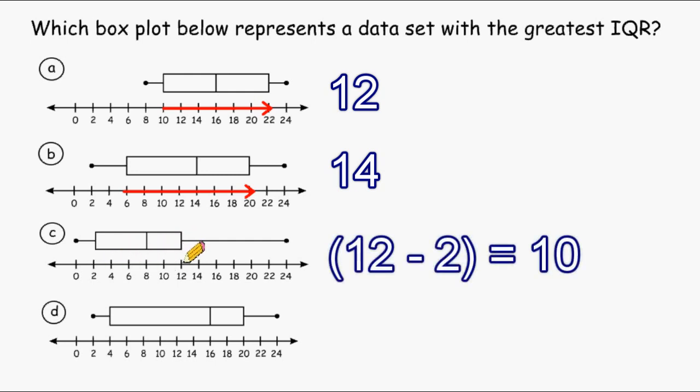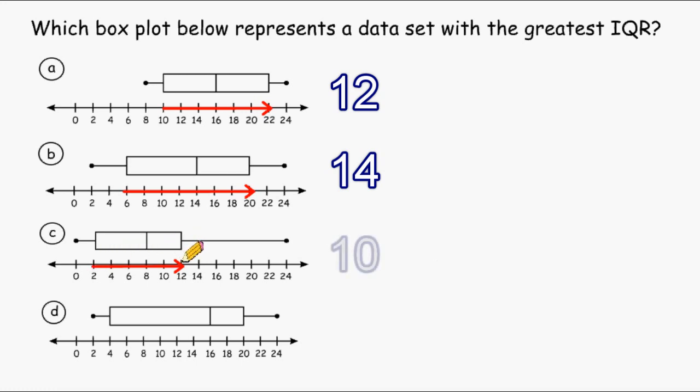And if you notice, that is the smallest IQR we have so far. If you just visually compare all four of these box plots, you can see that the box itself is the skinniest of the four box plots.